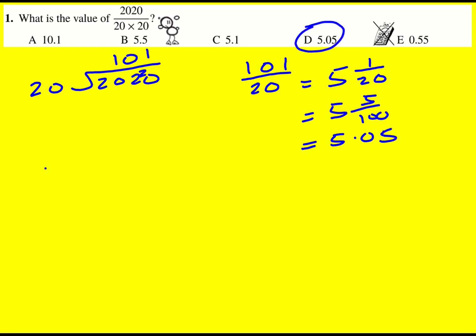Alternatively, I could have divided by 10, giving 10.1 divided by 2, and got 5.05 that way. Of course, there's other ways you can do this question, but ultimately this is the answer.